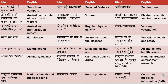'Rashtriya swastya evam chikitsa parshat' means National Health and Medical Council. 'Swastya uthpad' means health products. 'Grahak dawaai jankari' or 'upabhogta dawaai jankari' means Consumer Medicine Information — CMI is a specific term used in Australia.